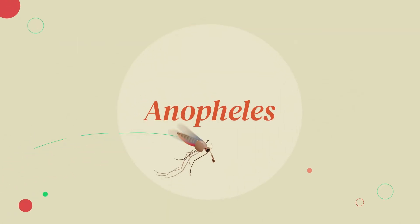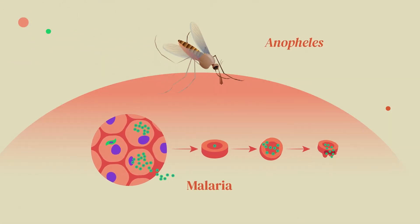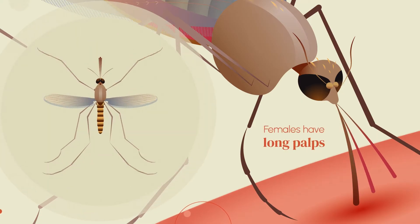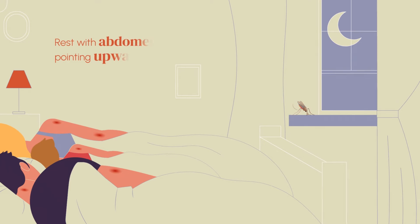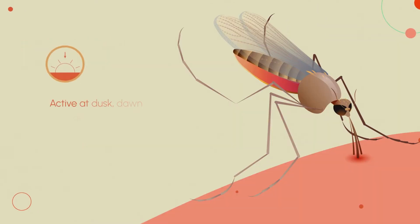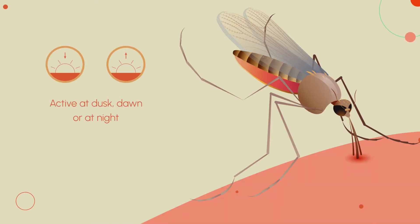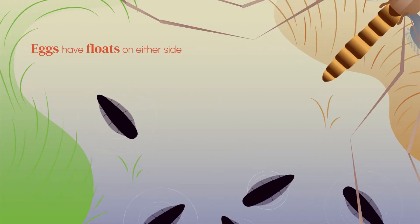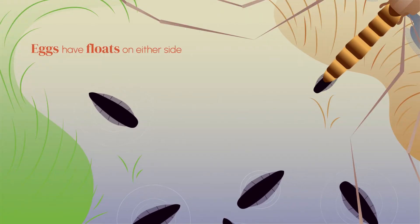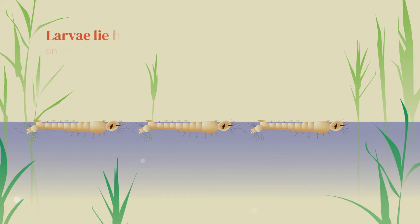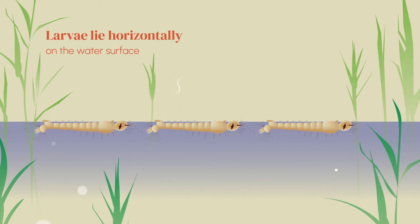Anopheles. Malaria can be transmitted only by the Anopheles mosquito species. Their adult females have long palps and rest with their abdomens pointing upwards. They bite during the dusk and dawn hours or at night. Anopheles eggs are laid directly on the water and are unique for having floats on either side, and larvae lie horizontally on the water surface.